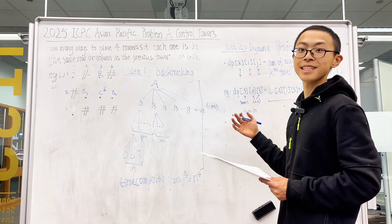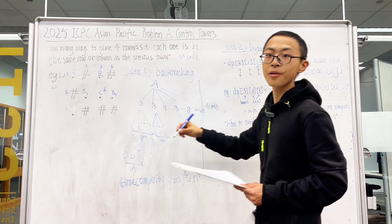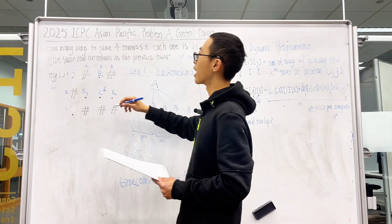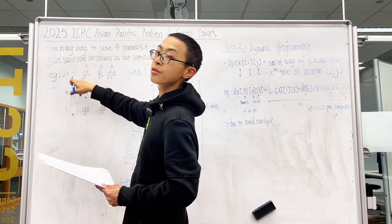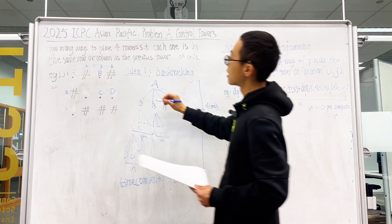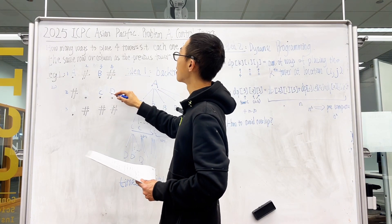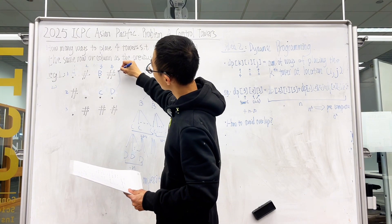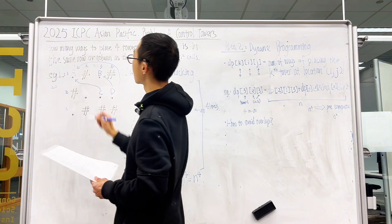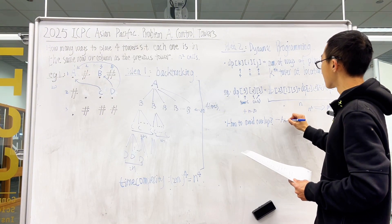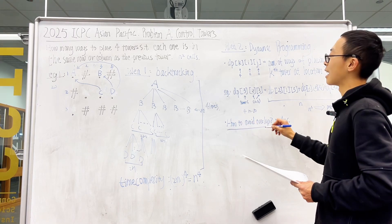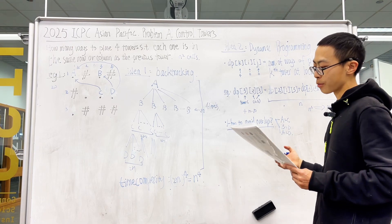Now, what is the problem with this method? How to avoid overlap? For example, what if we place B at A's position, or C at A's position? We are not able to avoid C overlapping with A directly. So there are three invalid cases: A equals C, B equals D, and A equals D.